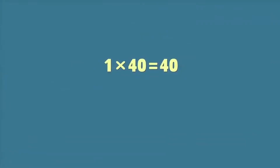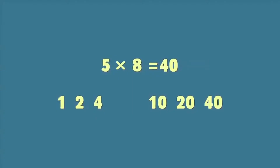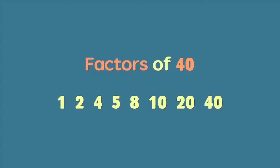Kagaya na lamang ng 40 — ano-ano nga ba ang mga factors ng 40? Pwedeng 1 times 40, pwedeng 2 times 20, pwede ring 4 times 10, o kaya ay 5 times 8 — lahat ay equal to 40. Kaya ang factors ng 40 ay 1, 2, 4, 5, 8, 10, 20, at 40.